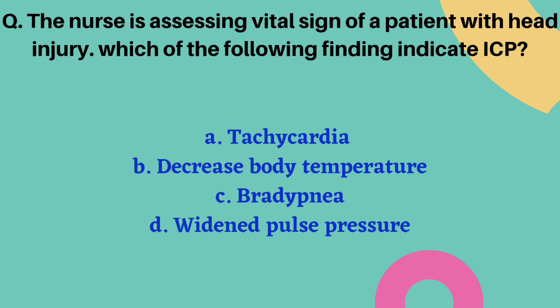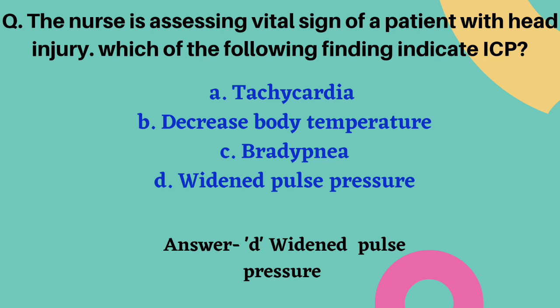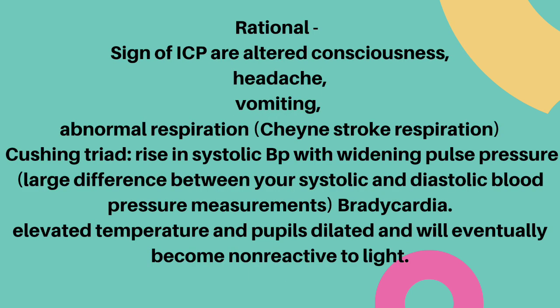The nurse is assessing vital signs of a patient with head injury — which findings indicate ICP? Options are tachycardia, decreased body temperature, bradypnea, widened pulse pressure. The correct answer is option D, widened pulse pressure. Signs of ICP include altered consciousness, headache, vomiting, abnormal respiration like Cheyne-Stokes, and Cushing's triad: rise in systolic blood pressure, widened pulse pressure, and bradycardia. Other signs are elevated temperature and fixed, dilated pupils non-reactive to light.